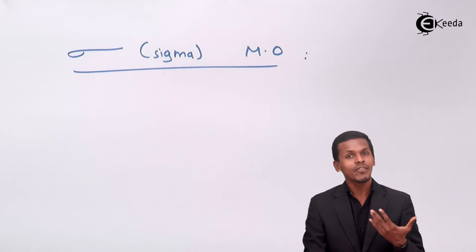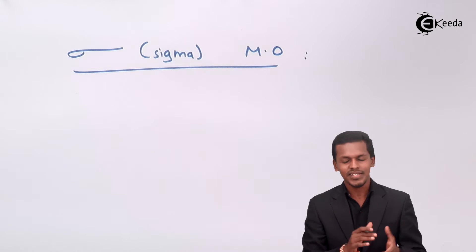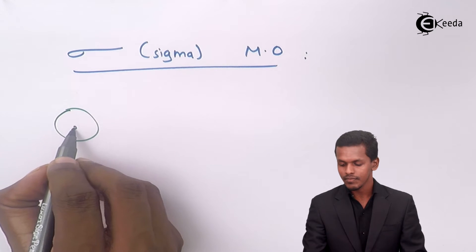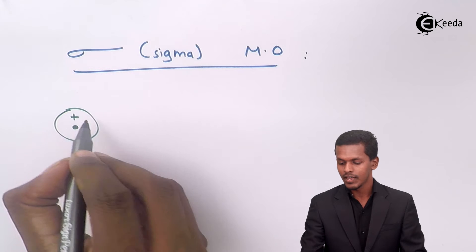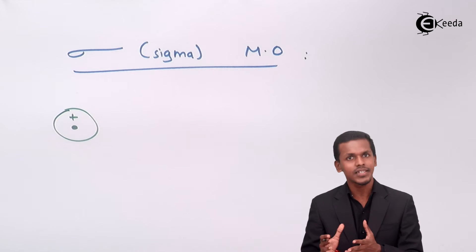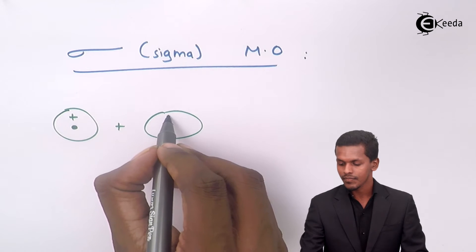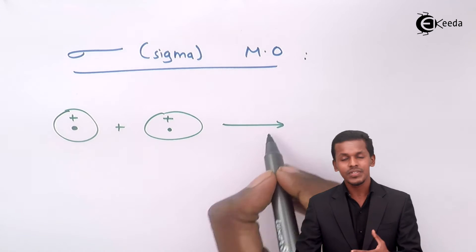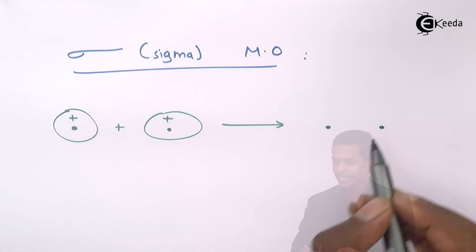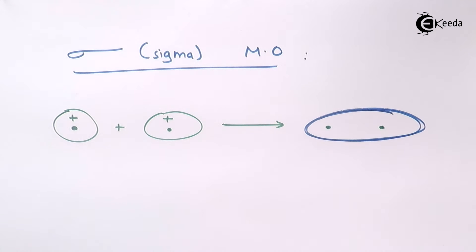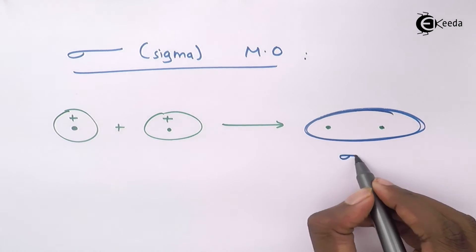Let me give an example. Suppose two atomic orbitals are of the same phase — talking about the bonding one first. If they are combining, we could see that the electron density is maximum in the overlap region, and that is how the sigma bond or sigma molecular orbital is formed, denoted by sigma.